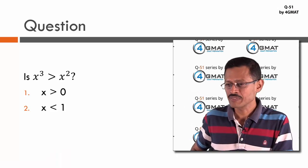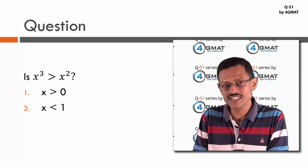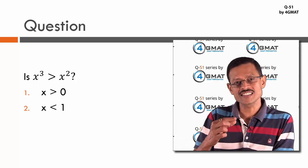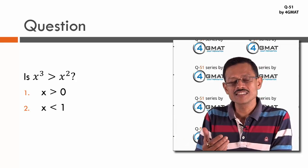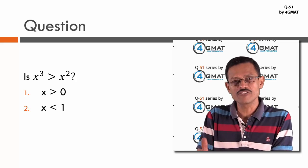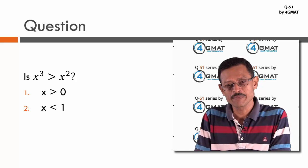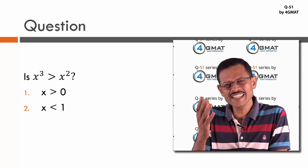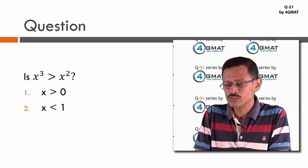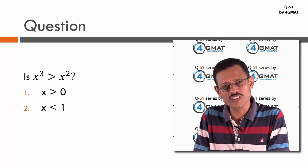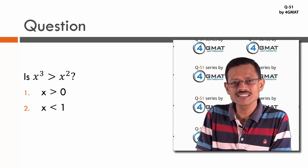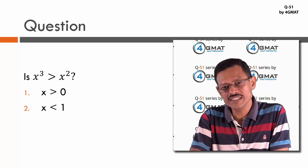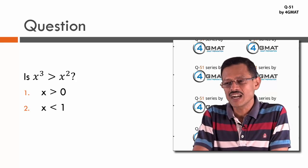The question reads: Is x³ greater than x²? We are comparing two different powers of x — x³ with x² — and determining whether x³ is greater than x². As with any DS question, two statements follow: Statement 1 is x > 0, and Statement 2 is x < 1.